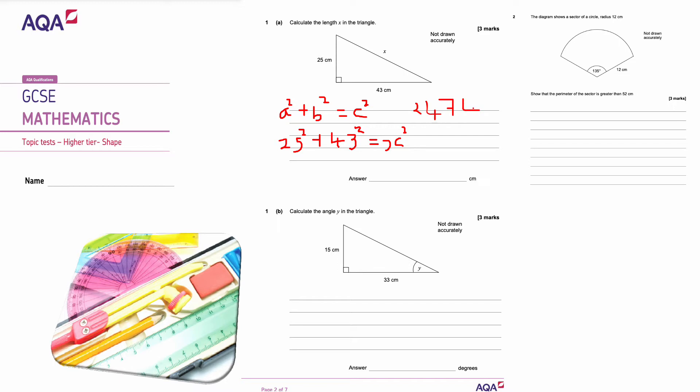Working this out on my calculator, 25 squared plus 43 squared is 2474. That's equal to X squared. So to get X on its own I would take the square root, because the opposite of squaring is square root. We are taking the positive root because we are looking at a length here. The square root of 2474 and the answer we get is 49.7 centimeters to one decimal place.